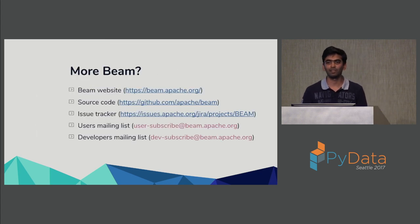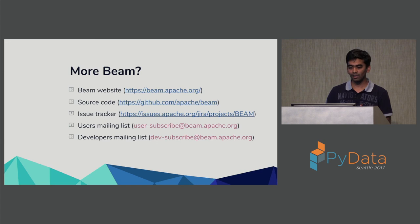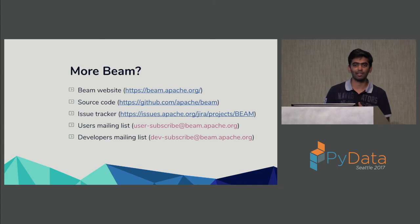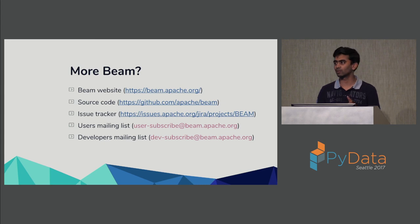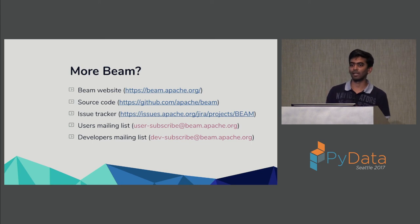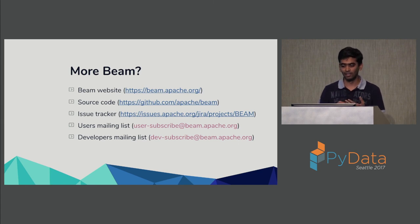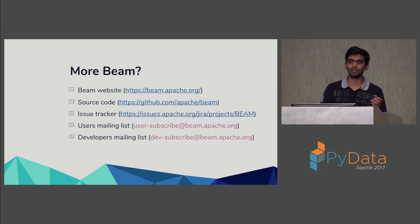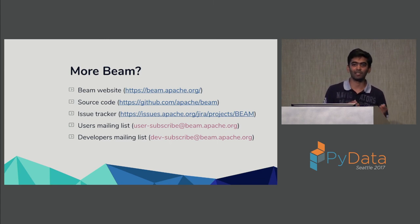To learn more about Beam, check the Beam website. All the code is available on GitHub — currently there are two SDKs, issues are tracked on Jira, and there are two mailing lists worth checking out. The user mailing list is for feedback about what you found hard or easy, and what new connectors should be added. The developer mailing list is for those who want to contribute — they can help you find the right Jira issue and pair you up with a guide.